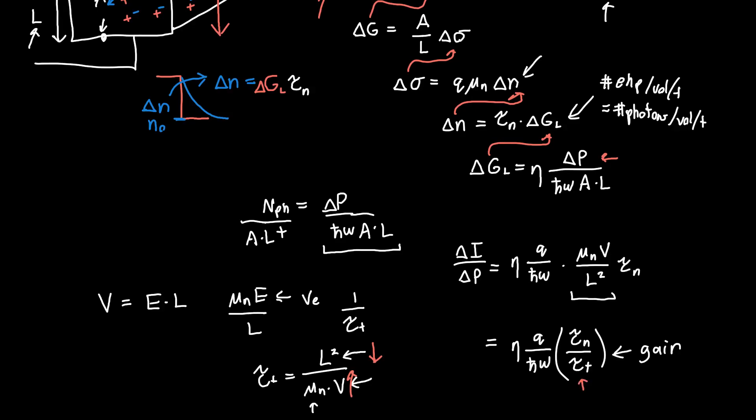If we increase the voltage and decrease the length of our device, then this tau_t will get smaller and our gain will get bigger. So for a fixed optical power we can actually get a larger current than we would otherwise, just by tweaking this tau_t, this transit time of the electron.